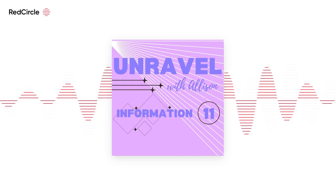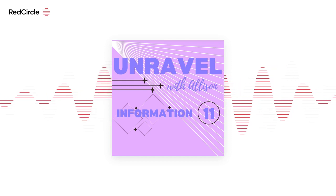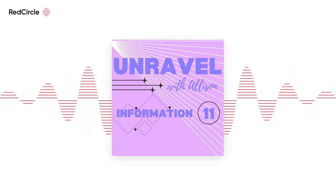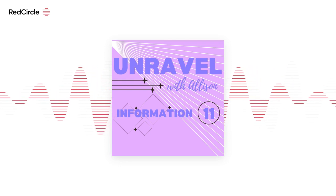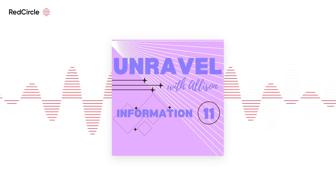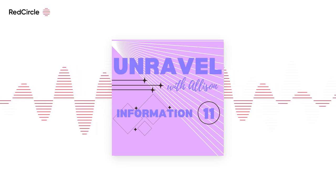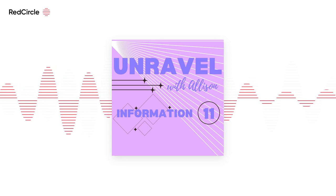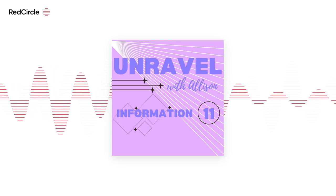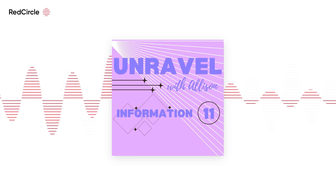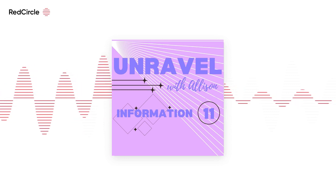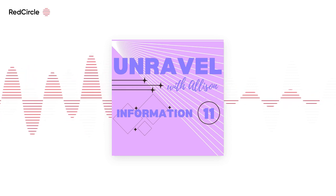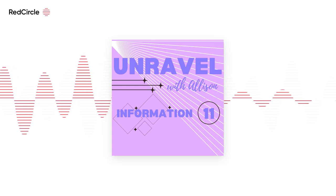Today we are talking about information. Jumping straight into the definition, information is facts provided or learned about something or someone, or what is conveyed or represented by a particular arrangement or sequence of things. It's what you know or what is being presented to you. It's not truth. You can know stuff without believing in it. It's just information. It's formed knowledge, a collection of your collective knowledge.